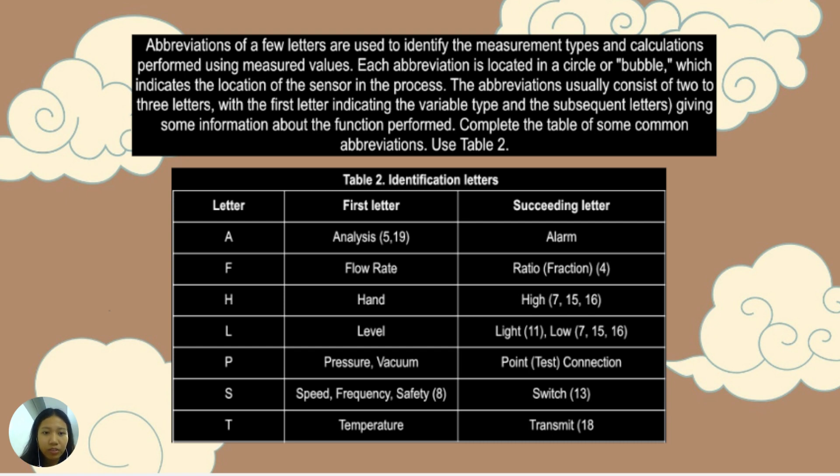For the identification letters. Letter A, for the first letter, it is analysis (5,19), succeeding letter alarm. F, flow rate, succeeding letter ratio, fraction (4). H first letter hand, succeeding letter high, 7, 15, 16. L, level, and for succeeding letter light (11), low 7, 15, 16. P, pressure or vacuum, and then for the succeeding letter point test connection. S, first letter speed, frequency, safety, and succeeding letter switch. And lastly, T, first letter temperature, and for the succeeding letter transmit.